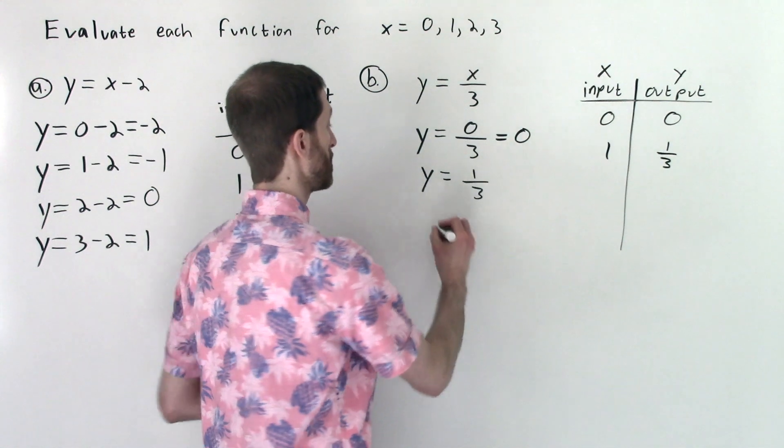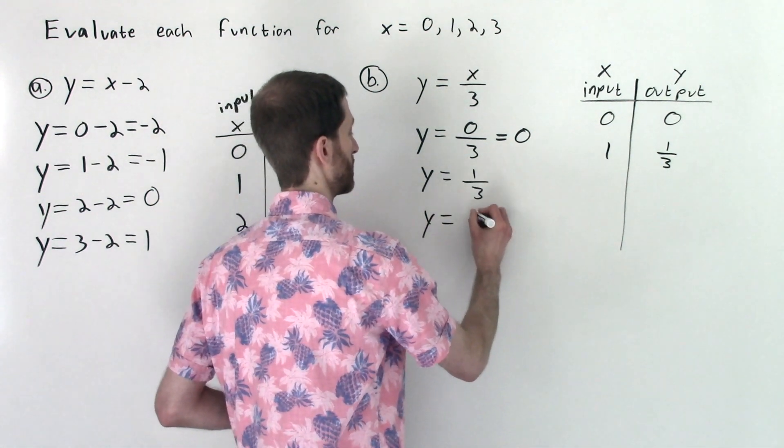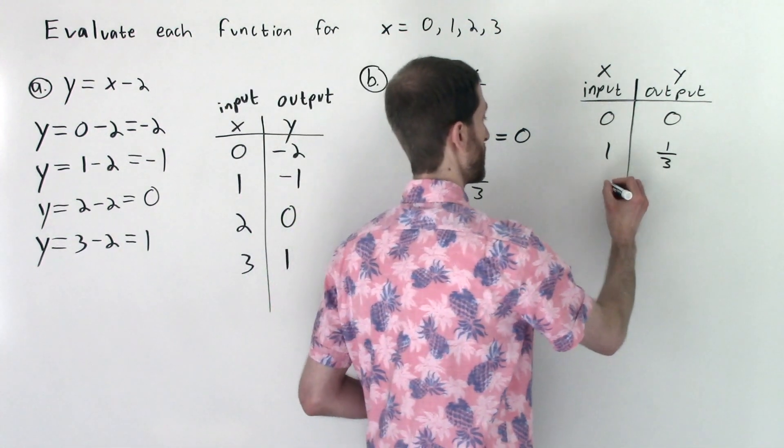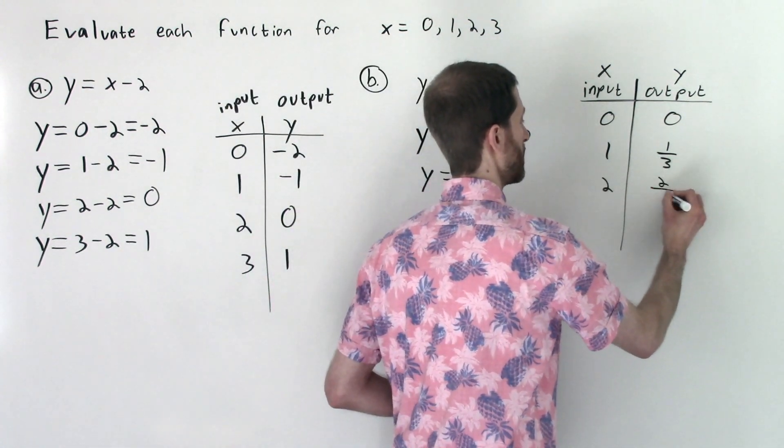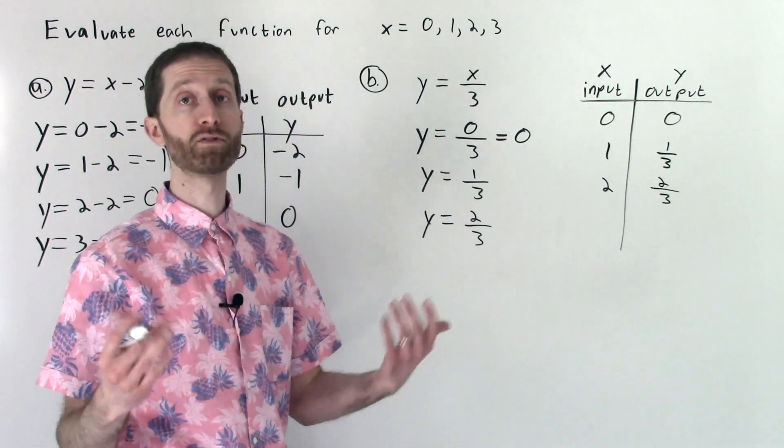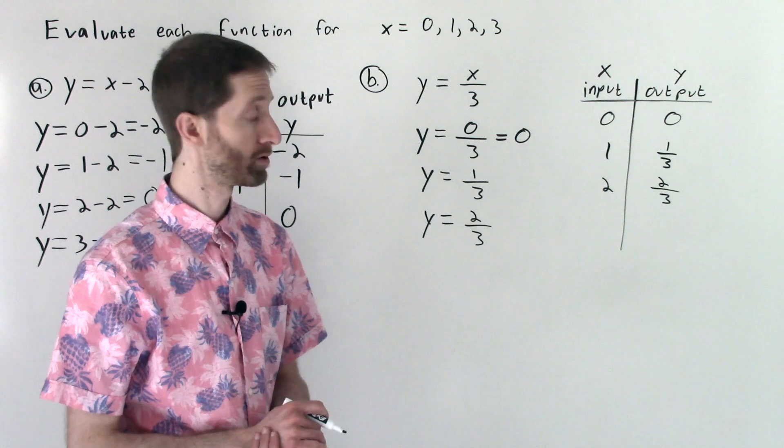Now we're going to input 2. I have a feeling these division problems are not going to be so bad. 2 thirds is our output. So I input 2, 2 thirds is our output. Your teacher might want you to use a calculator, in which case you can divide 2 divided by 3 and round to whatever decimal they want you to round to.